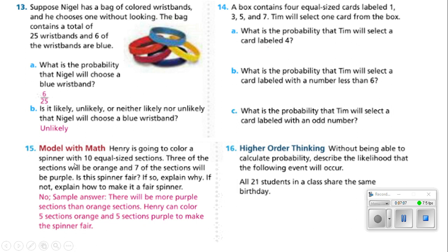Henry is going to color a spinner with 10 equal size sections. Three of the sections will be orange and seven of the sections will be purple. Is the spinner fair? If so, explain why. If not, explain how to make it fair. If there's 10 equal sections and seven of them are purple, that is definitely not fair. There will be more purple sections than orange sections. Henry can color five sections orange and five sections purple if you wanted to make it fair. Now that we're done with number 15, let's go back to number 14.